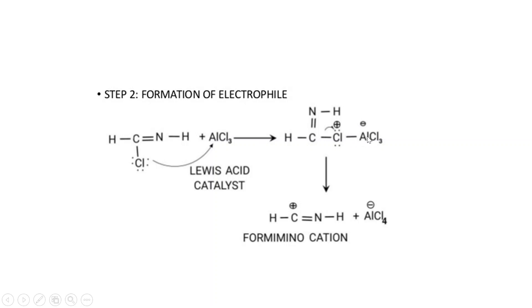When you attack the lone pair to AlCl3, it becomes negatively charged, forming AlCl4 minus. There is a bond here, and when this bond breaks, the carbon becomes positively charged — this is unstable. Then this bond further breaks, and the Cl goes with Al, forming AlCl4 minus. The carbon becomes positively charged and this is called the formimino cation, because carbon is positive — that is a cation.